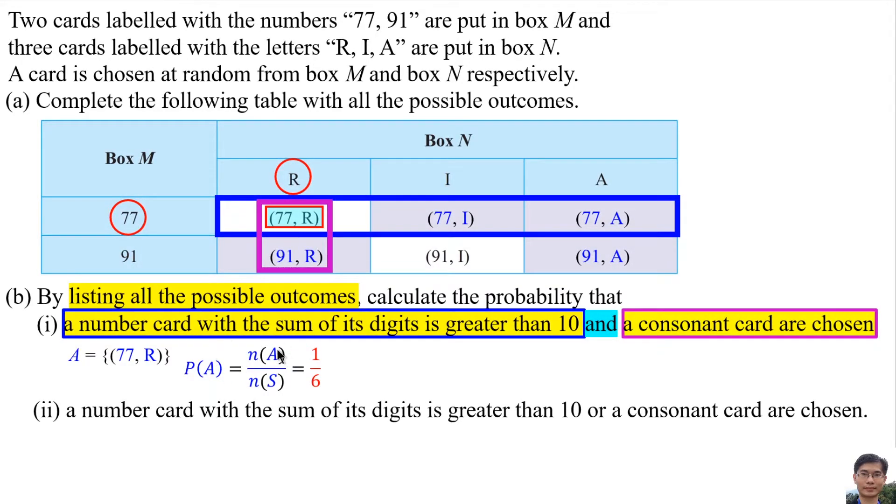The number of elements in set A is 1. And the number of elements in sample space, there are 6 elements. So 6. So the answer is 1 over 6.